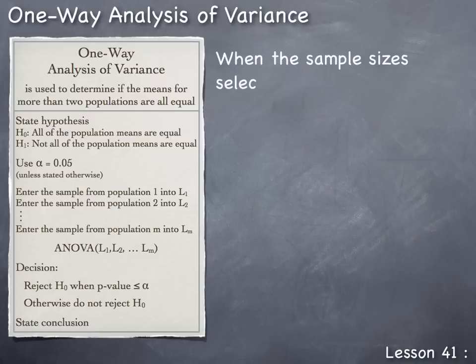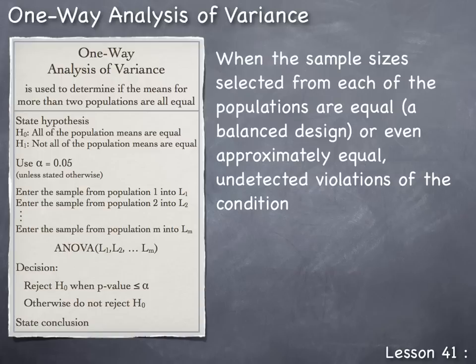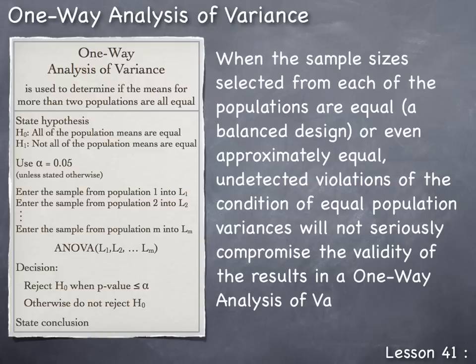When the sample sizes selected from each population are equal — referred to as a balanced design — or even approximately equal, undetected violations of the condition of equal population variances will not seriously compromise the validity of the results. Therefore, even though it is not necessary, it is good practice to conduct a balanced design whenever possible.